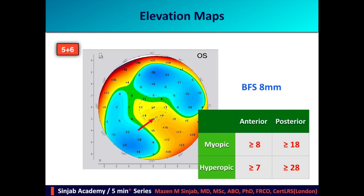For the elevation maps, we study the anterior and posterior elevation maps together. We have to look at the value corresponding to the thinnest location, then follow the table showing cut-off points for myopic and hyperopic patients for both anterior and posterior elevation maps. For example, if a myopic patient has a value on the anterior surface more than 8, it is considered a high risk factor.